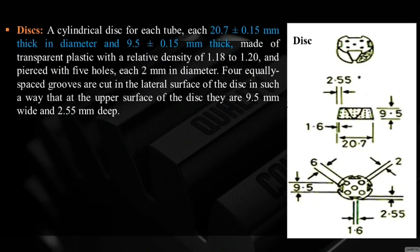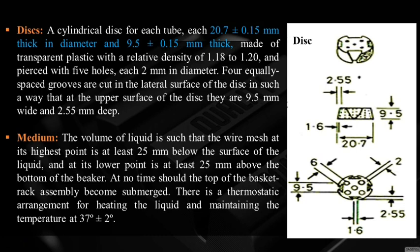A cylindrical disc is used for each tube — 20.7 ± 0.15 mm in diameter and 9.5 ± 0.15 mm thick, made of transparent plastic with a relative density of 1.18 to 1.20, pierced with 5 holes each of 2 mm. Four equally spaced grooves are cut in the lateral surface of the disc. The volume of liquid is such that the wire mesh at its highest point is at least 25 mm below the surface of the liquid when the basket is at its highest point.